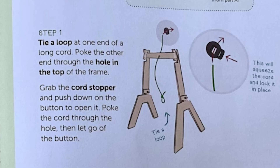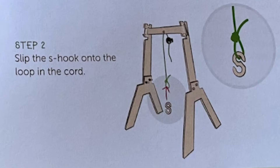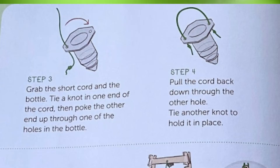Move on to Part B, which is adding on the bottle. Step one: tie a loop at one end of a long cord, poke the other end through the hole in the top of the frame. Grab the cord stopper and push down on the button to open it, poke the cord through the hole, then let go of the button. Step two: slide the S hook onto the loop in the cord. Step three: grab the short cord and the bottle, tie a knot in one end of the cord, then poke the other end up through one of the holes in the bottle. Step four: pull the cord back down through the other hole and tie another knot to hold it in place.